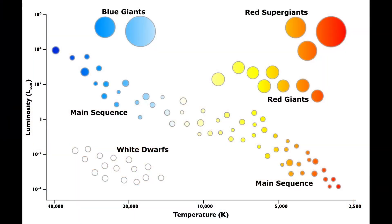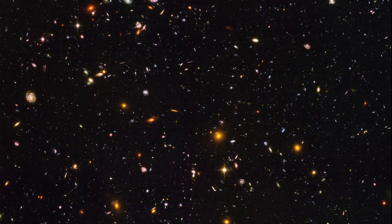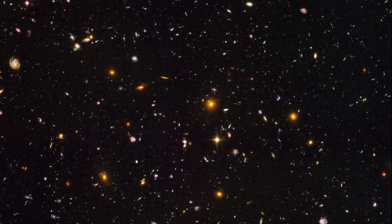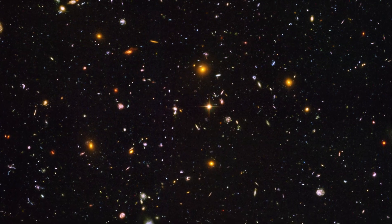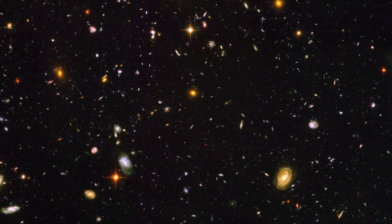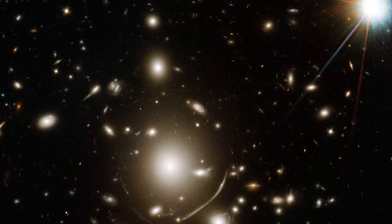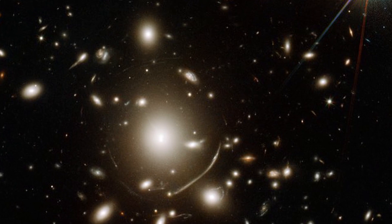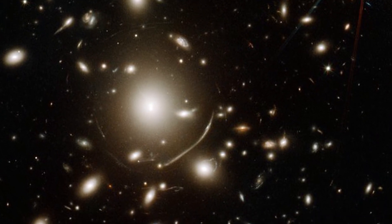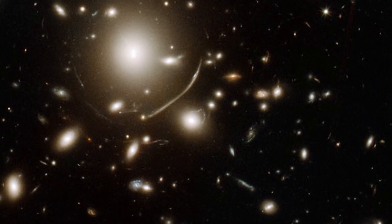Our sun is about 4.5 billion years old and it's not even halfway through its life cycle. The problem is that no one has actually observed this process and our records for the stars only go back a few thousand years at best. So there are some really good examples that show that this slow evolution of stars is wrong and that actually what happens can be very dramatic and very rapid.